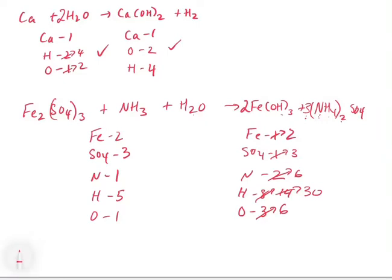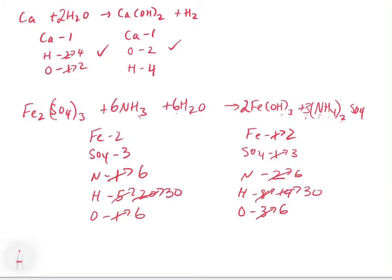Next, balance nitrogen: to get 6 nitrogens on the left, we multiply NH3 by 6, which also gives us more hydrogens — 6×3=18, plus 2 from H2O = 20 so far. Finally, balance oxygen: the left has 1 oxygen and the right has 6, so we put a 6 in front of water. That gives 6 oxygens. Adding up all hydrogens: 6×3=18 plus 6×2=12, totaling 30. Hydrogens match — the equation is balanced.